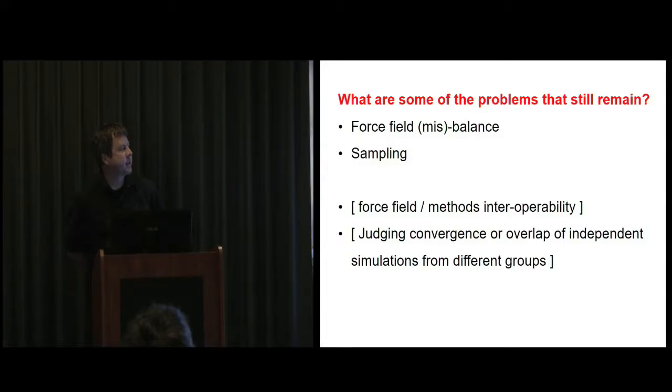Another issue we face in the community is force field and methods interoperability. There's lots of codes out there, GROMACS, NAMD, CHARMM, AMBER. Do they all give the same results? If I'm running the CHARMM force field in AMBER, is it equivalent to running the CHARMM force field in GROMACS or not? We don't really have a good way within the community to easily assess that. Oftentimes judging the convergence or overlap of independent simulations from different groups is difficult because people don't share their data. They'll say, I've got a new method, I can sample much faster than you. When we compare the data, we see that they're actually not the same.